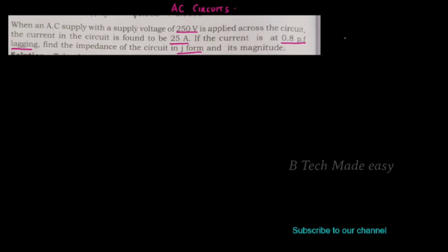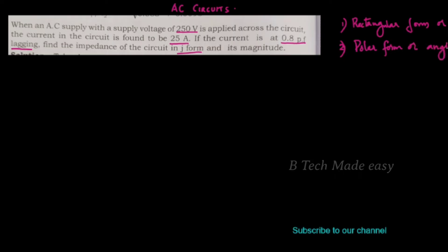We represent two types of values. The first type is rectangular form, also called the J-form. The second type of representation is polar form, or angle form.